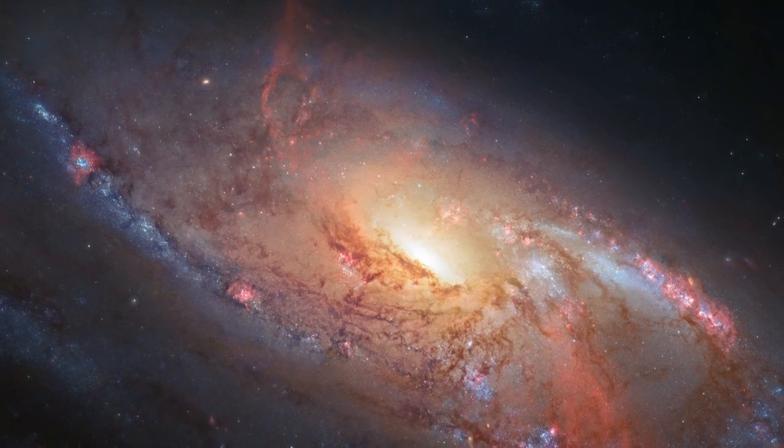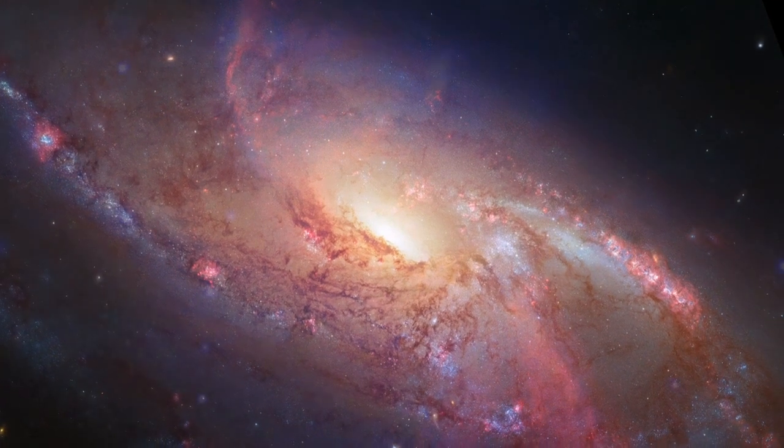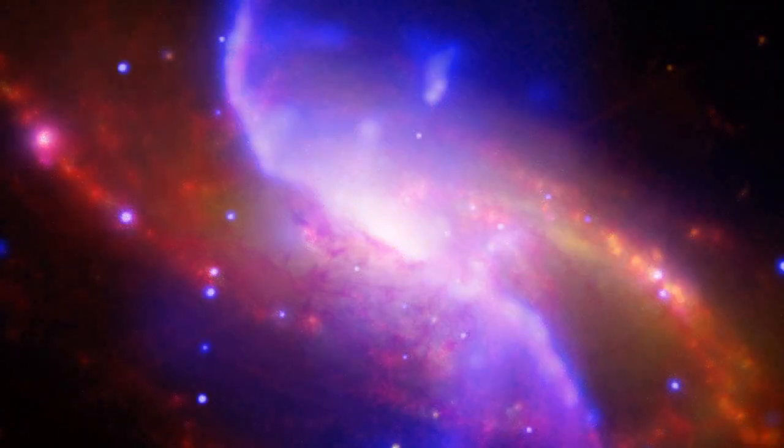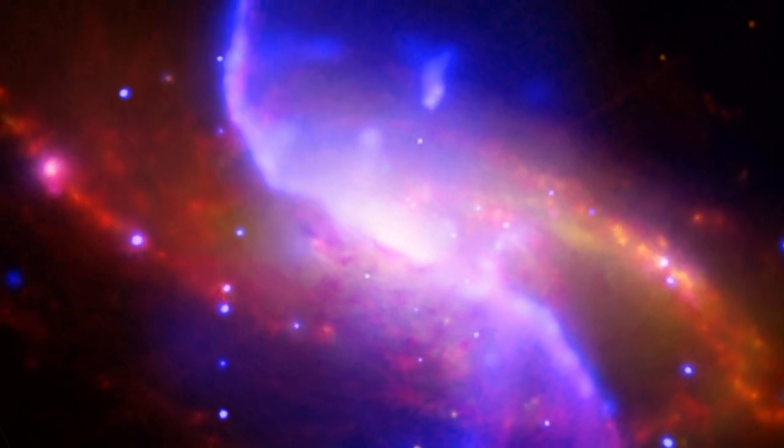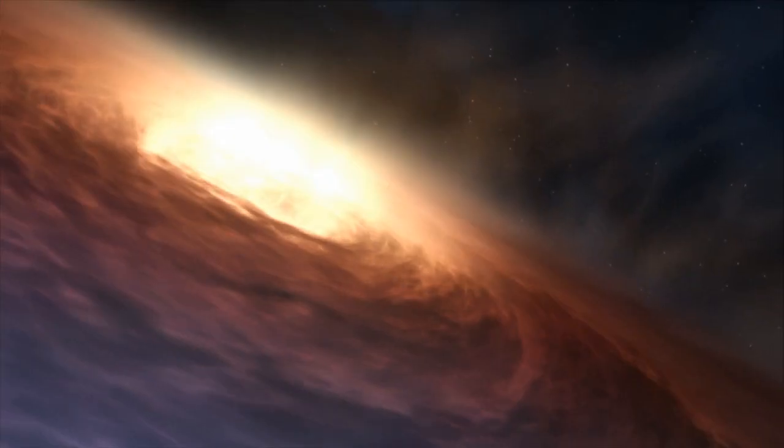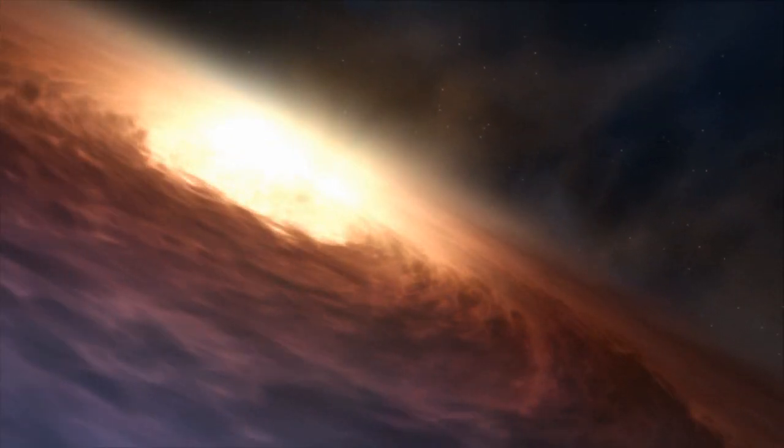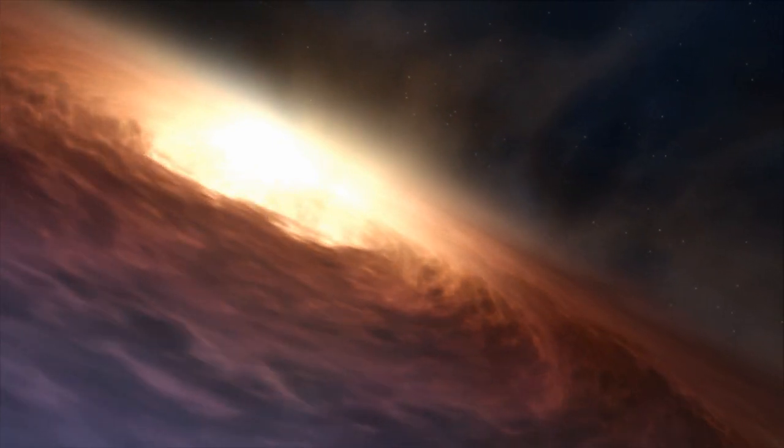While these ghostly extra arms have been known about for decades, astronomers were unsure of how they formed. Until recently. Yet again, the culprit is Messier 106's supermassive black hole.